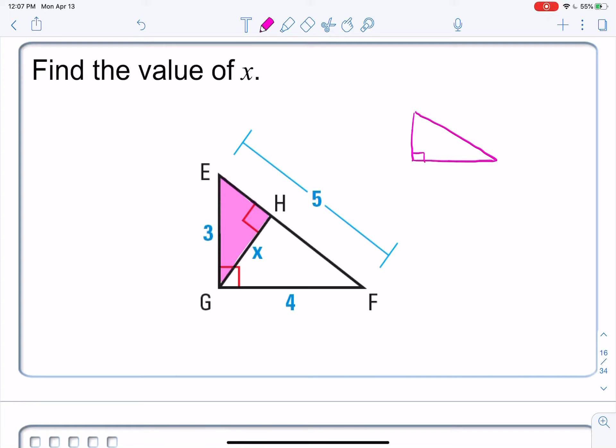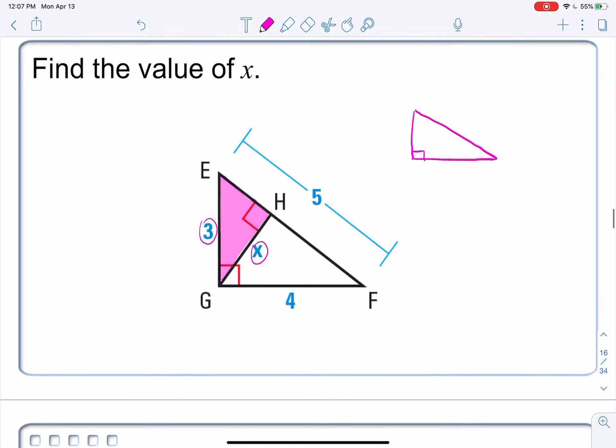And then exaggerate it so that it's obvious that you have a short side and a longer side. Now, on that right triangle, we only have two pieces of information. We have the X and we have the 3.